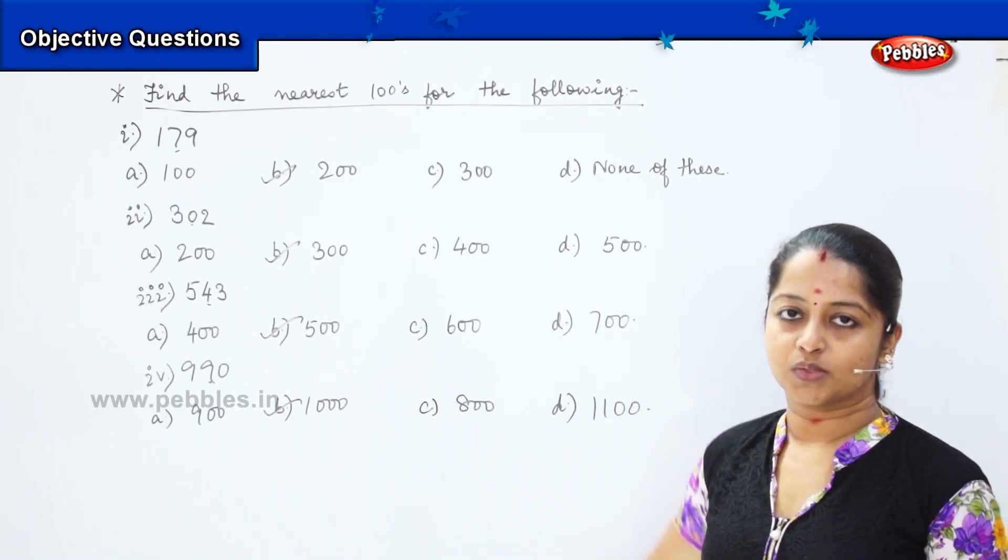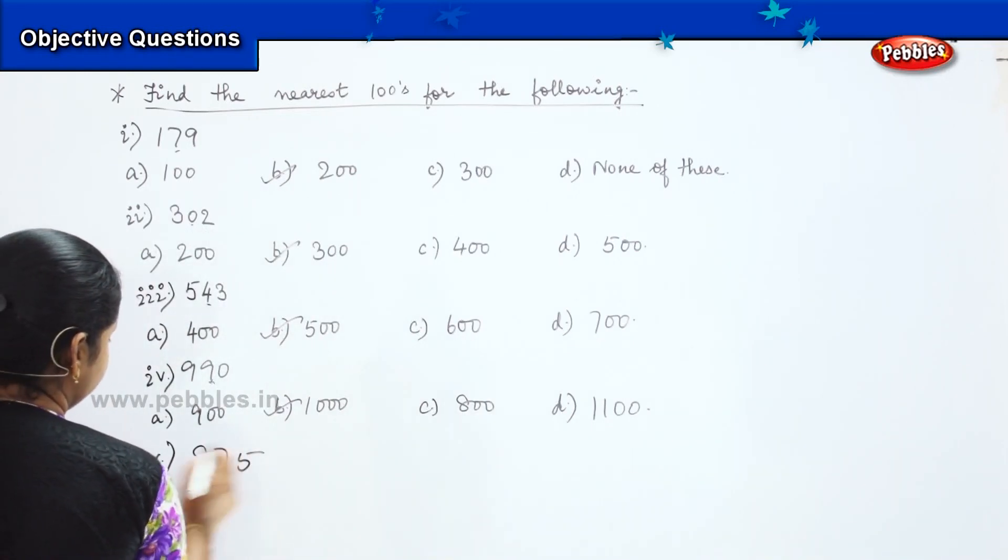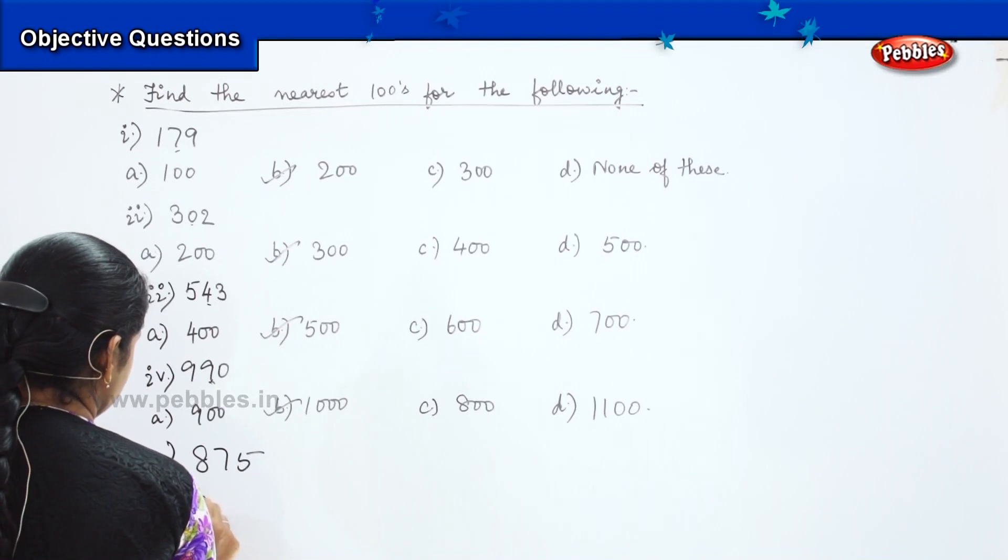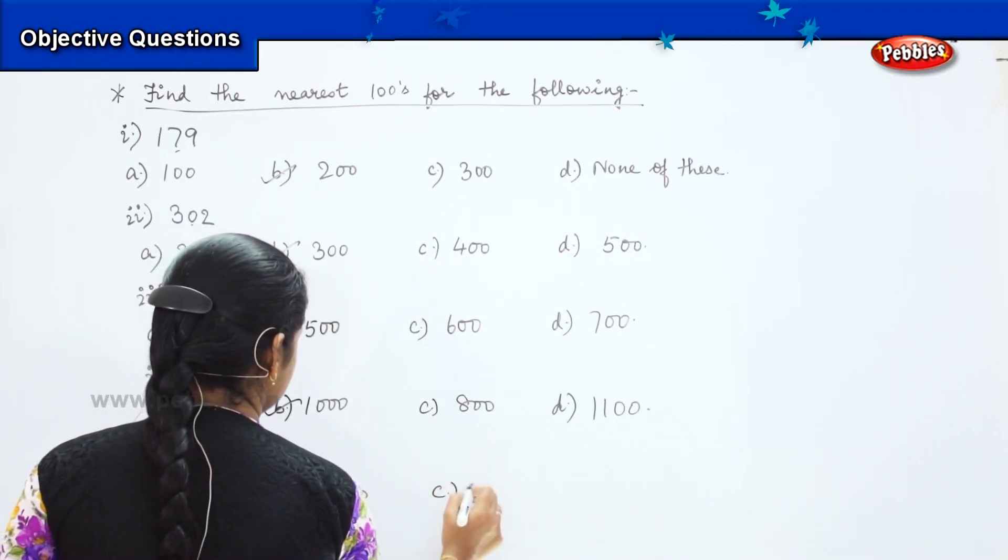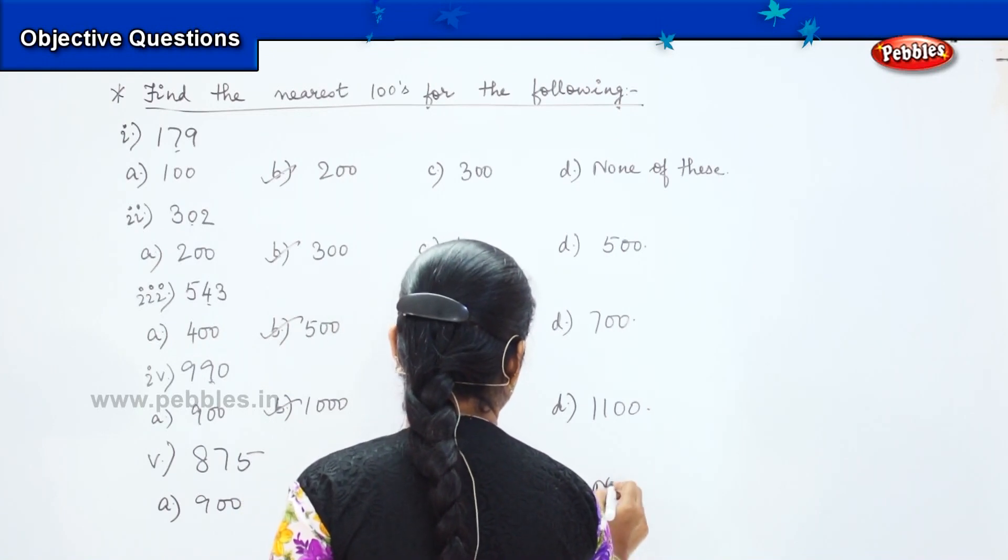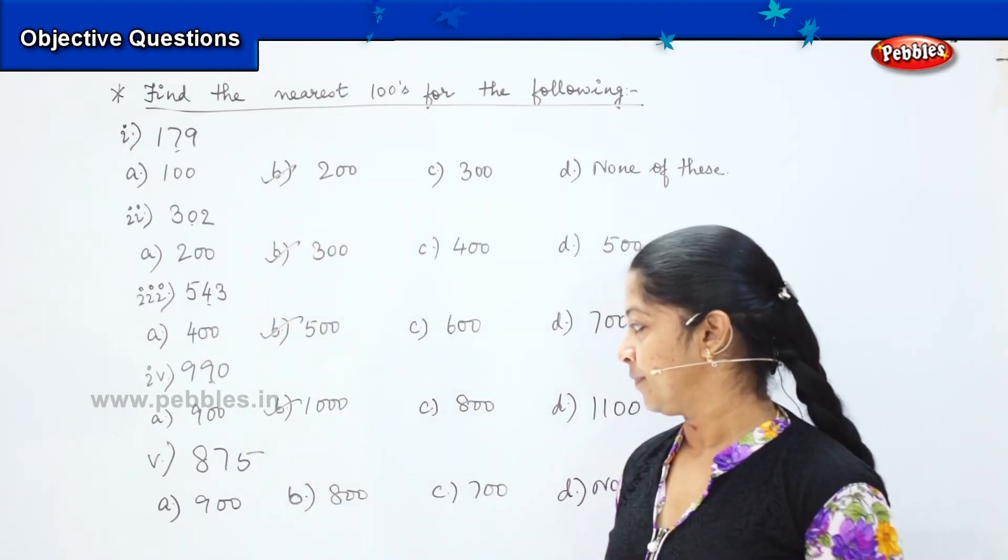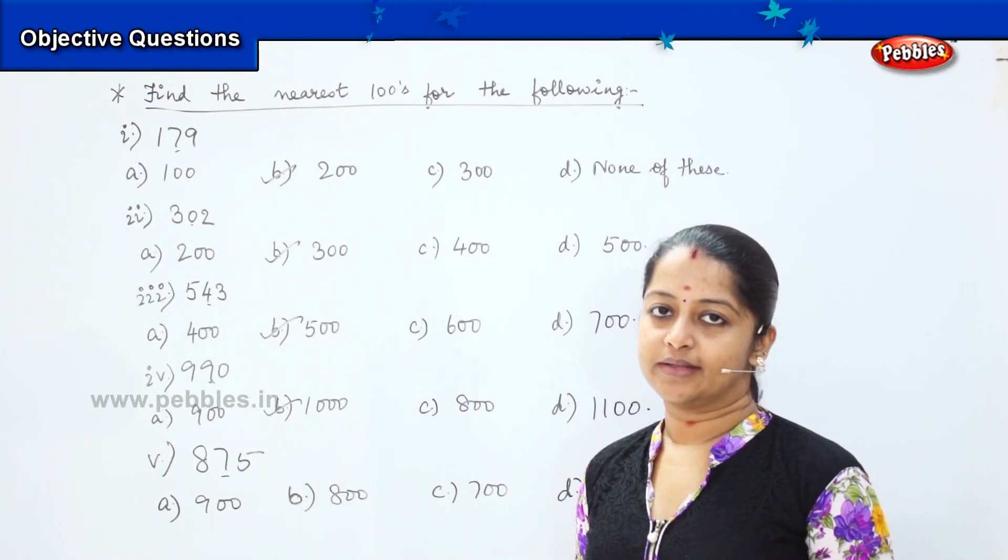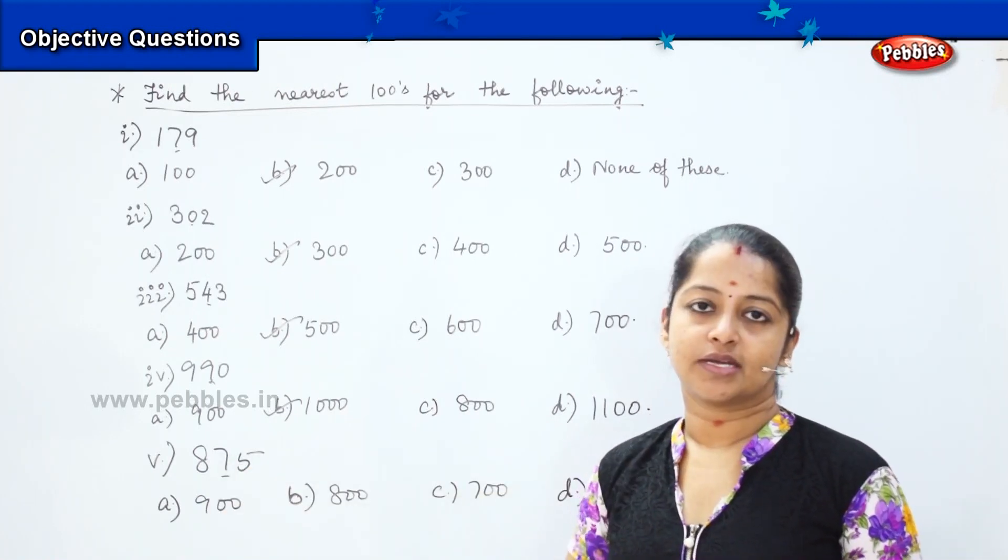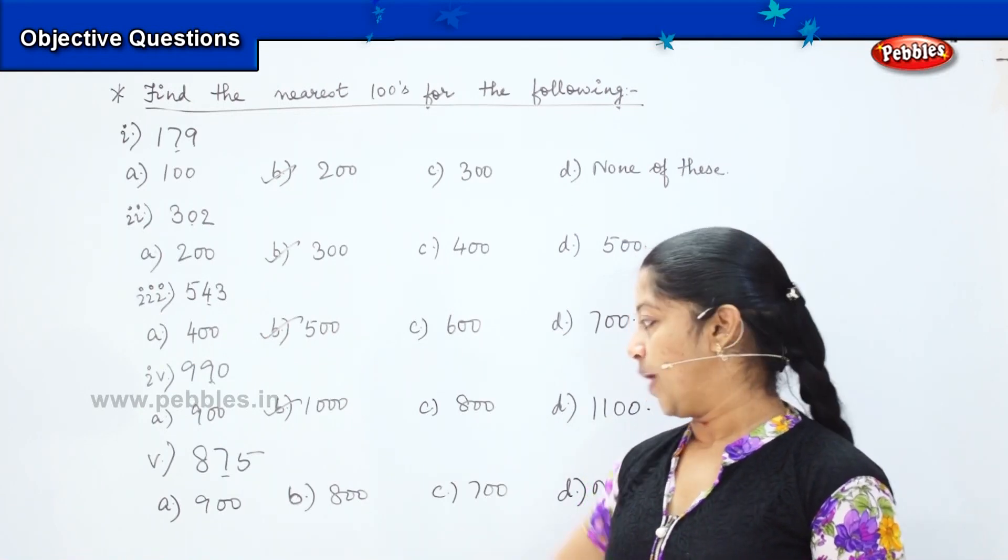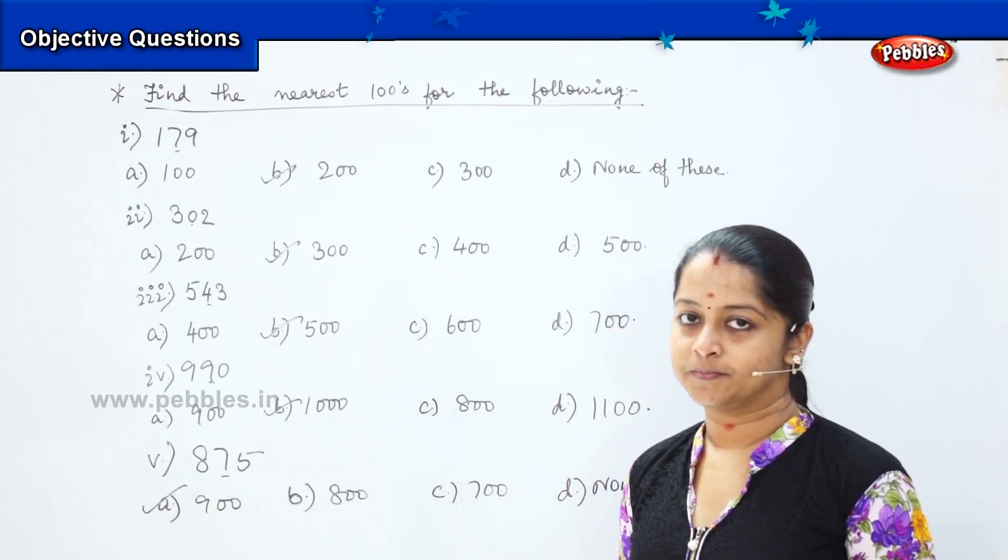The next digit for you is 875 and your options are 900, 800, 700 or none of these. Tell me, the number is 7 which is greater than 5. I will be rounding it off to the succeeding nearest hundred. After 800 what is the next number? It is 900 and where can you find 900 here? Yes, it is option A. You got it correct.